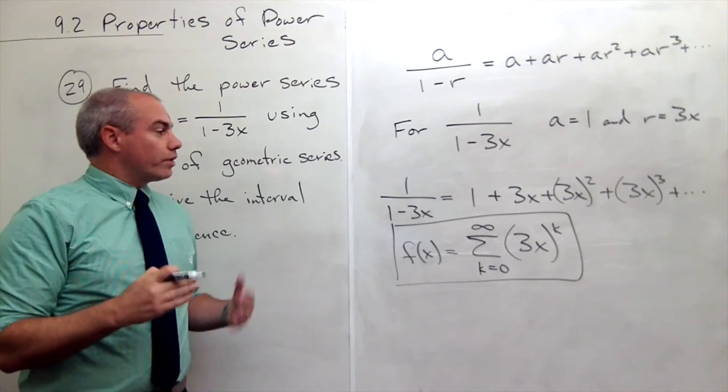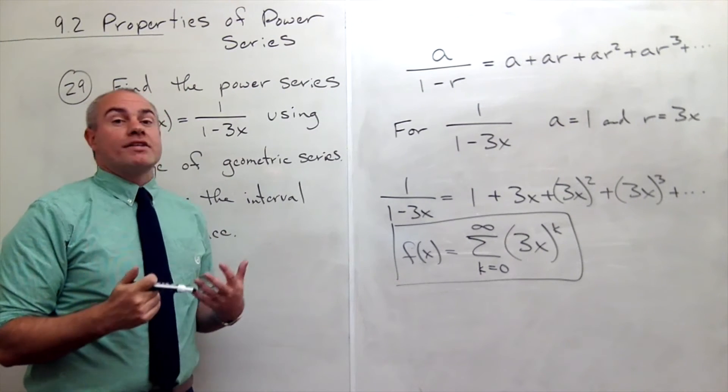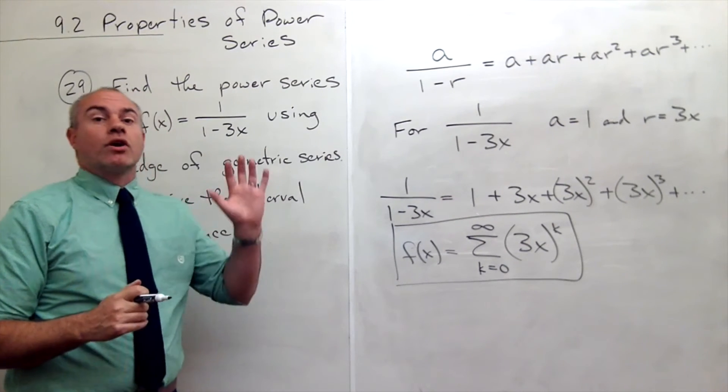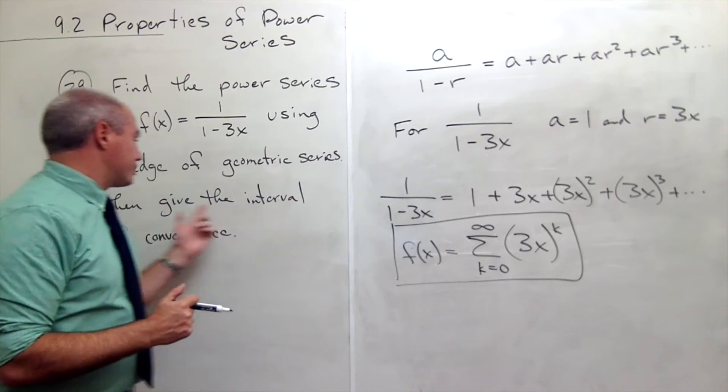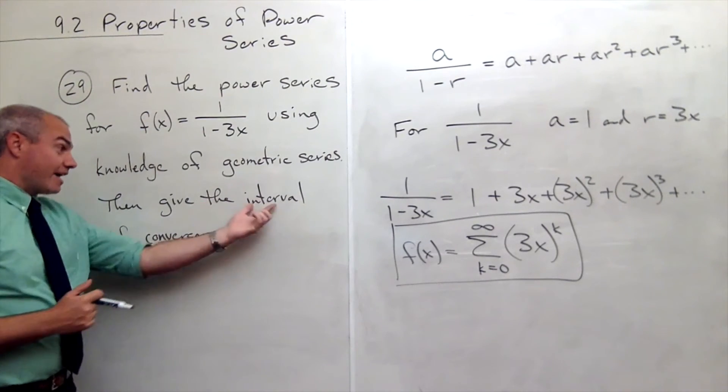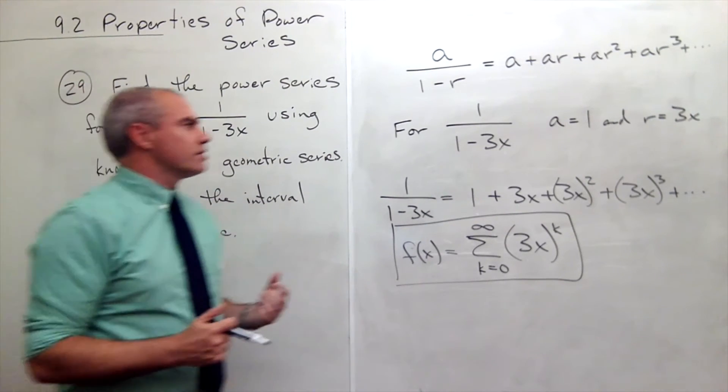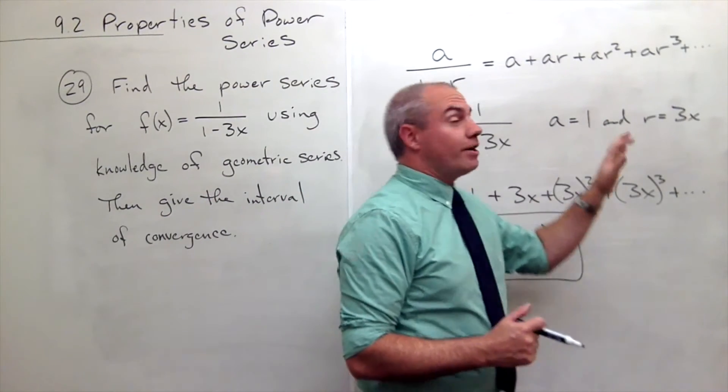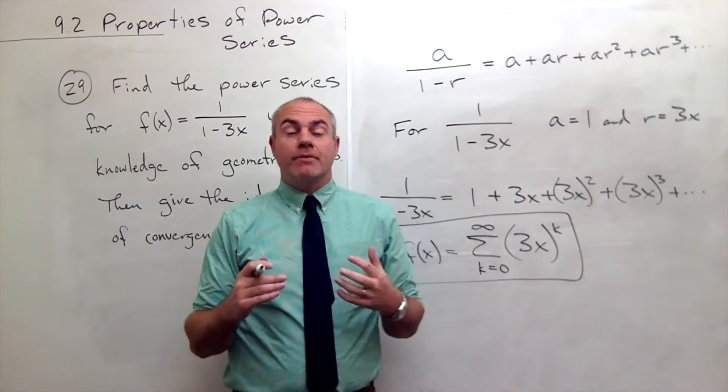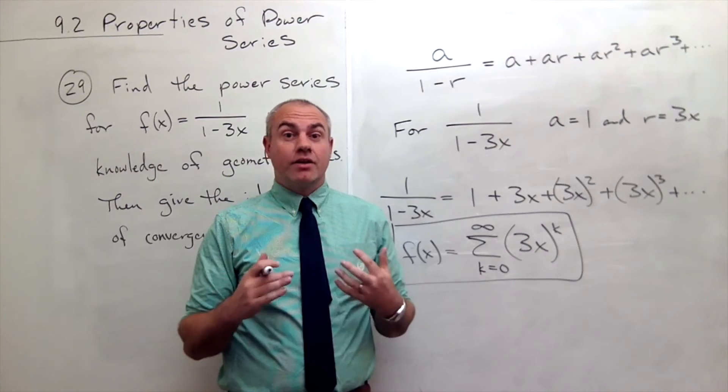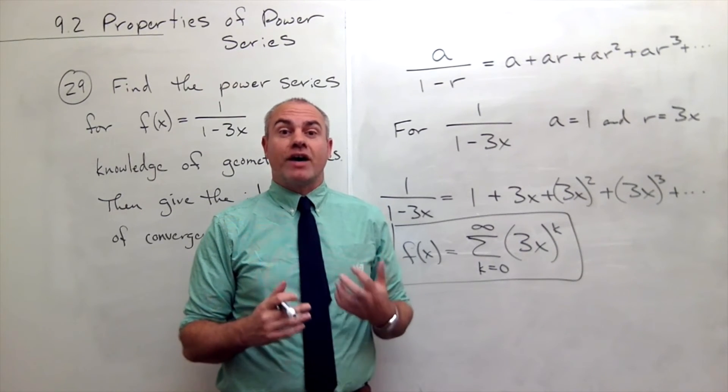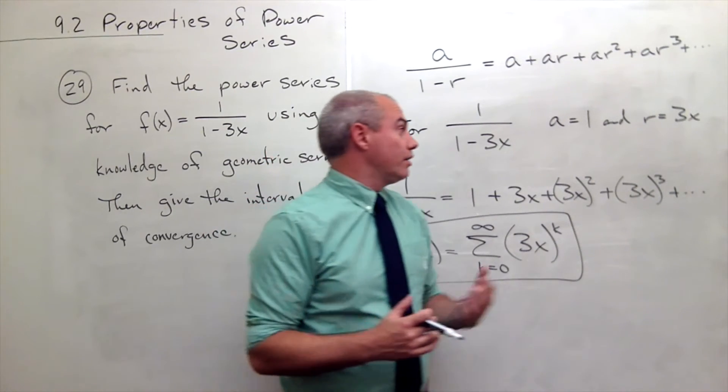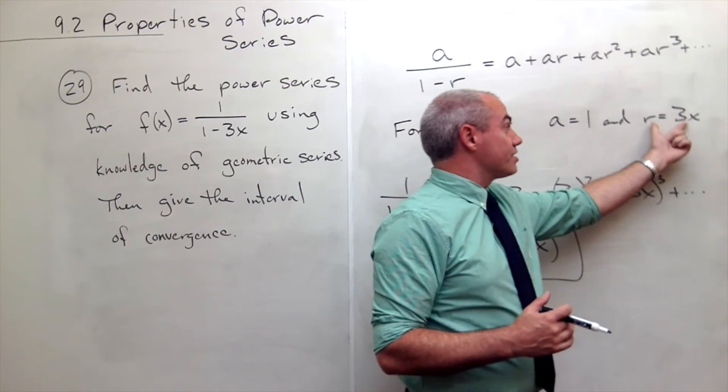Now, the other question is, what is the radius of convergence or what is the interval of convergence? It specifically asks what's the interval of convergence. I know for geometric series that geometric series only converge if the absolute value of r is less than 1. r in this case is 3x.